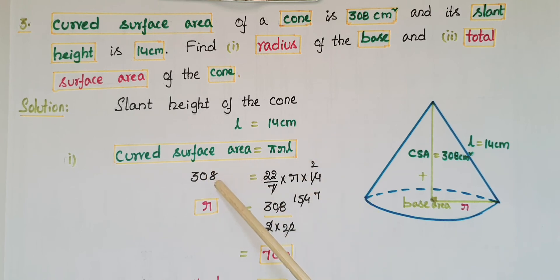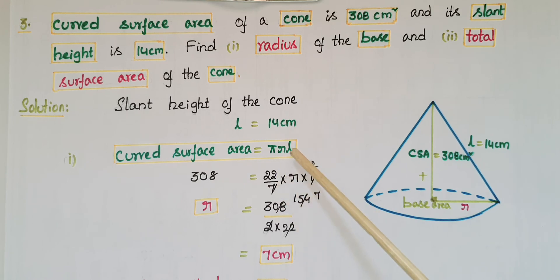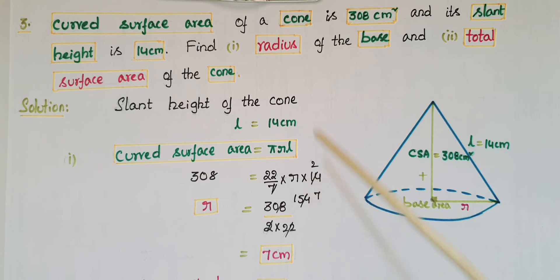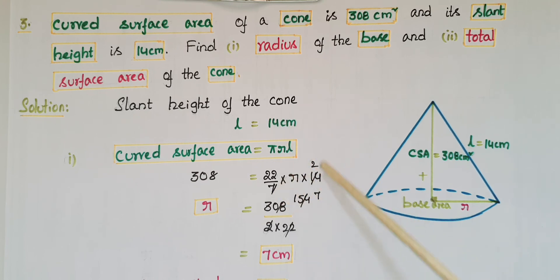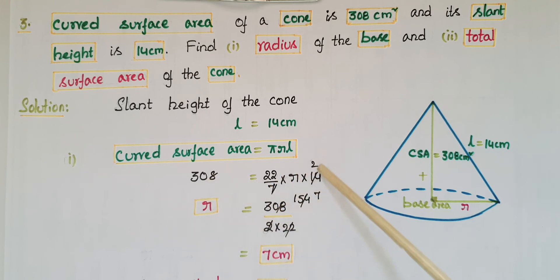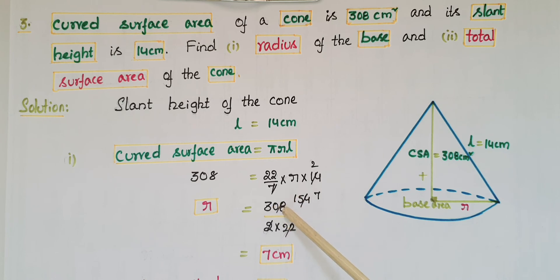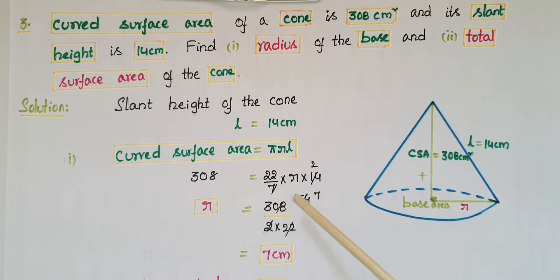So 308 = 22/7 × r × 14. Simplifying: 22/7 × 14 = 22 × 2 = 44, so r = 308 / 44 = 7 centimeters. The radius of the base is 7 centimeters.